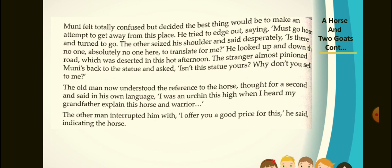Muni felt totally confused but decided the best thing would be to make an attempt to get away. He tried to edge out saying 'must go home' and turned to go. The other seized his shoulder and said desperately, 'Is there no one, absolutely no one here to translate for me?' He looked up and down the road which was deserted in the hot afternoon. The stranger almost pinioned Muni's back to the statue and asked, 'Isn't this statue yours? Why don't you sell it to me?' The old man now understood the reference to the horse, thought for a second and said in his own language: 'I was this high when I heard my grandfather explain this horse and warrior.' The other man interrupted with, 'I offer you a good price for this,' indicating the horse.